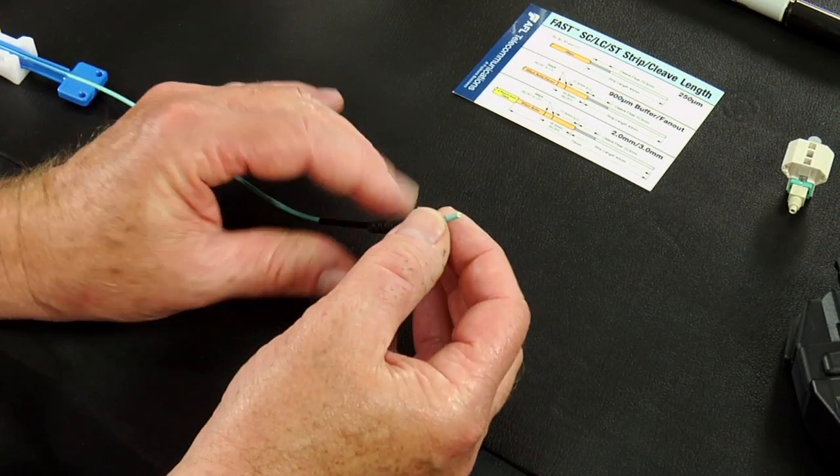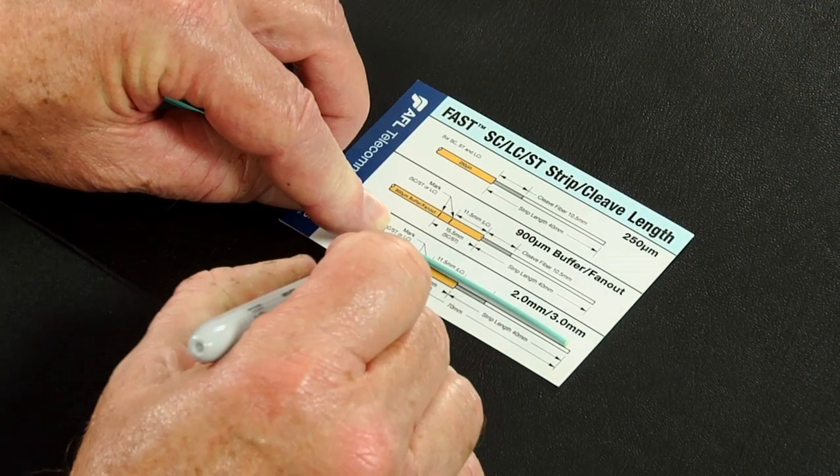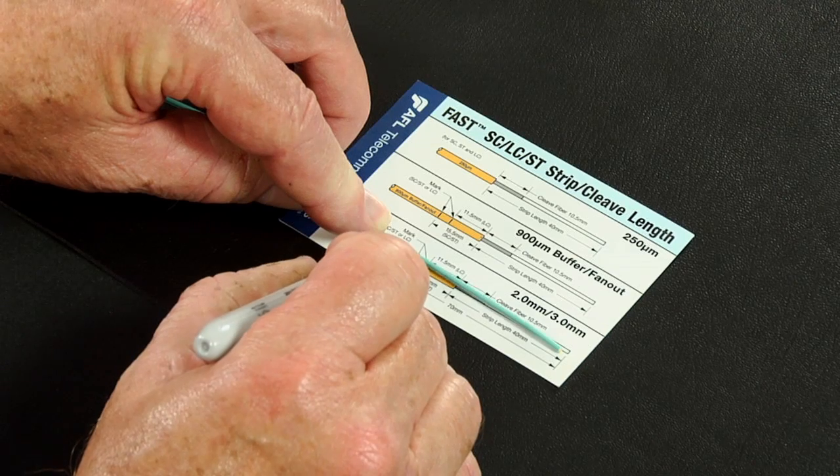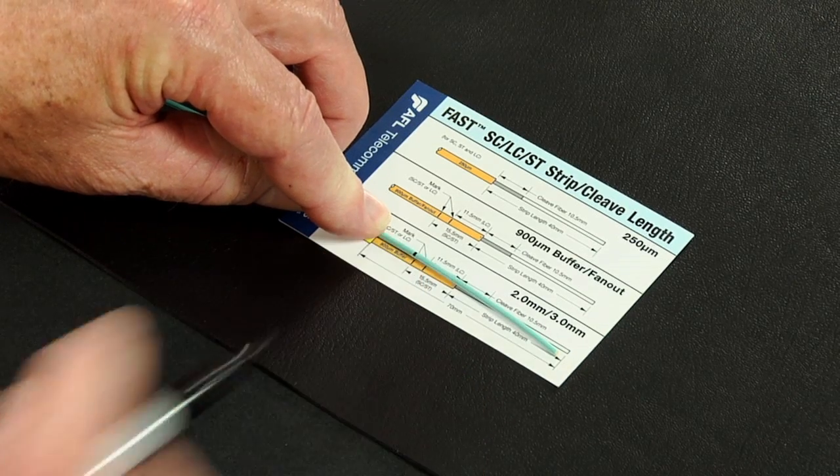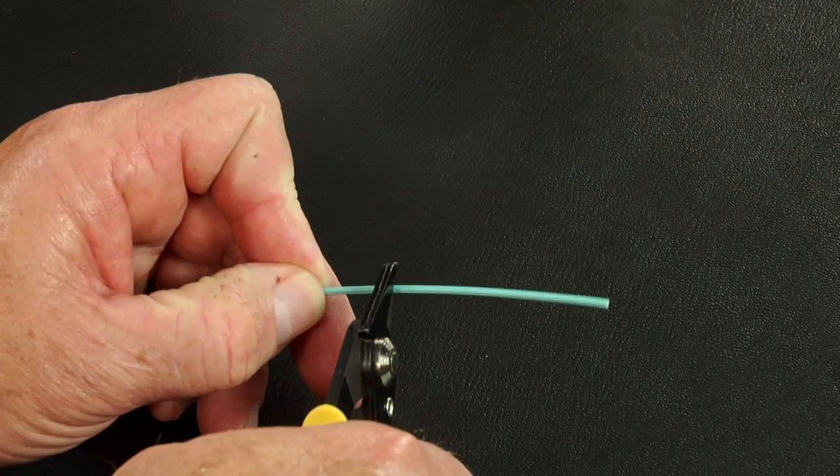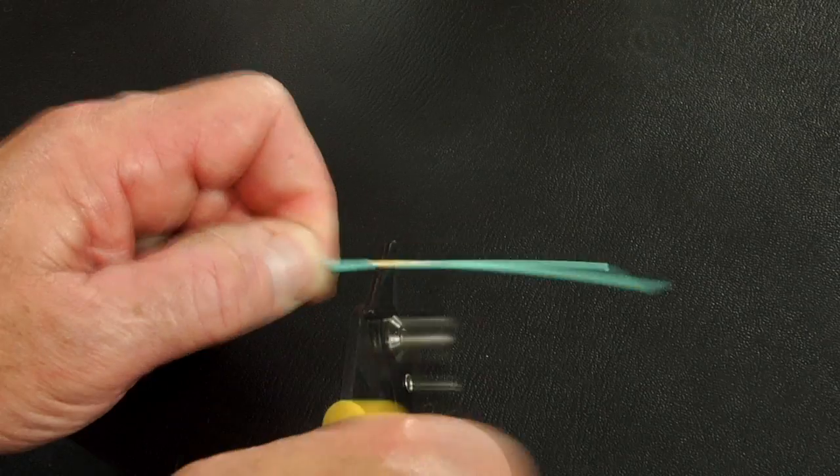Slide on the two-millimeter boot. Refer to the stripping template and mark the two or three-millimeter cable at 65 millimeters from the end of the cable. Remove 65 millimeters of two or three-millimeter cable jacket.